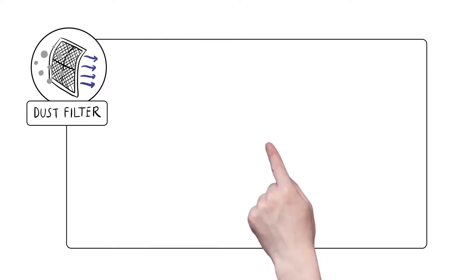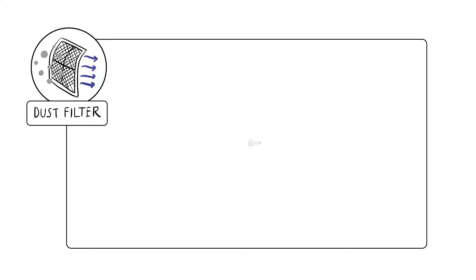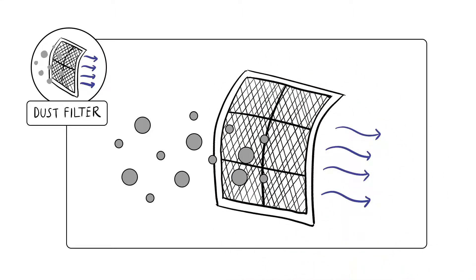1. Dust filters. Dust filters trap small harmful dust particles in the filter by forcing air through a fine mesh, filtering the air as it goes through the air conditioning unit.